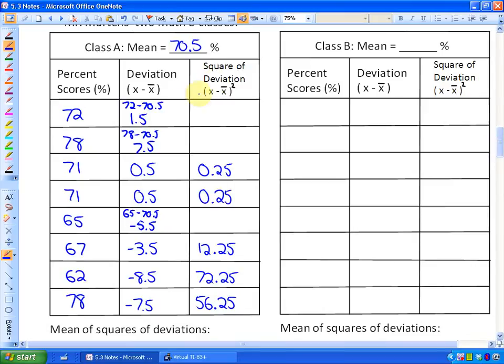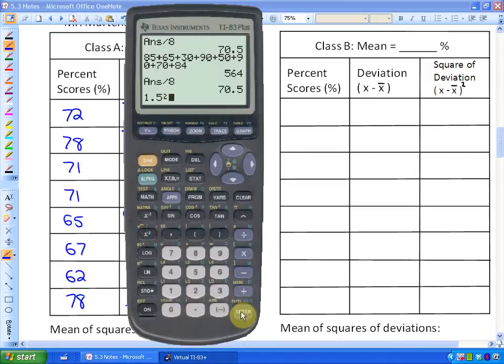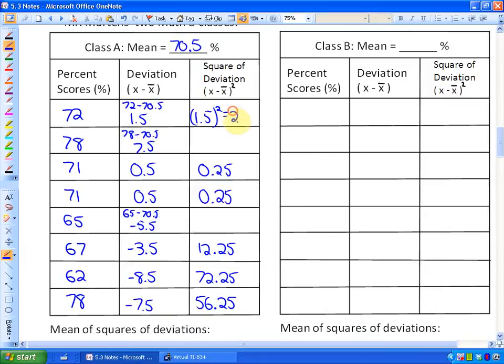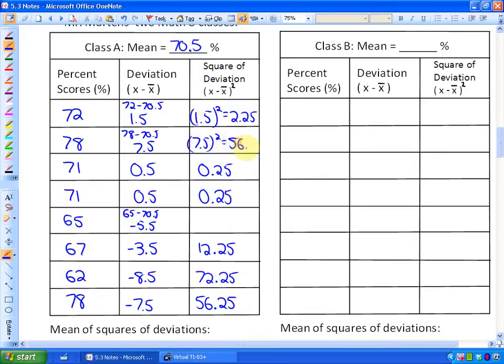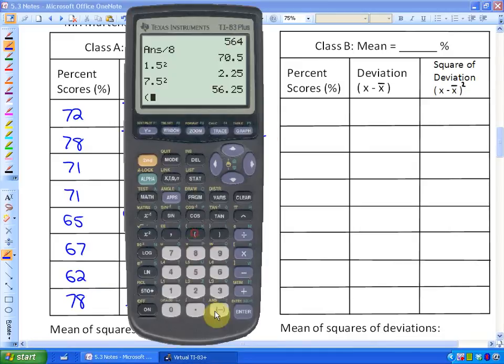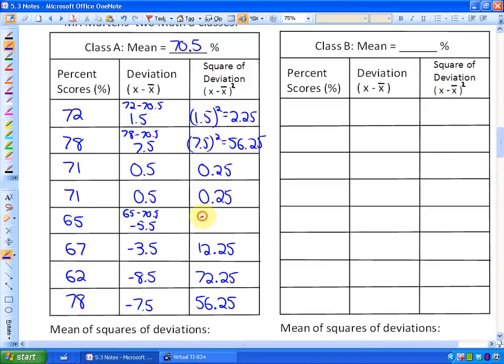Your next step is to square all of these numbers. So square the deviation. I would do, for example, 1.5 squared, and I would get 2.25, or 7.5 squared is 56.25. And negative 5.5 squared, the thing to realize is that negative squared equals positive. So if I square it, I get a positive value, 30.25. All of these squares should be positive.